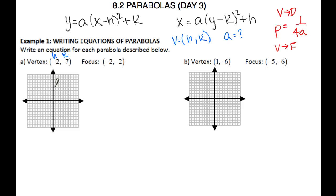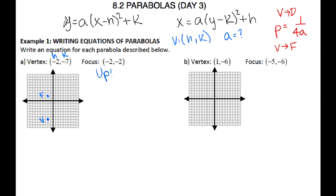Sometimes it's easier to graph your points or your directrix so you can figure out what direction the parabola is opening. My vertex is at negative 2, negative 7, and my focus is at negative 2, negative 2. Your parabola always opens towards the focus, since the focus is always inside the parabola. Starting at the vertex and moving towards the focus, this parabola is opening up. Since it opens up, we use the y equals equation.